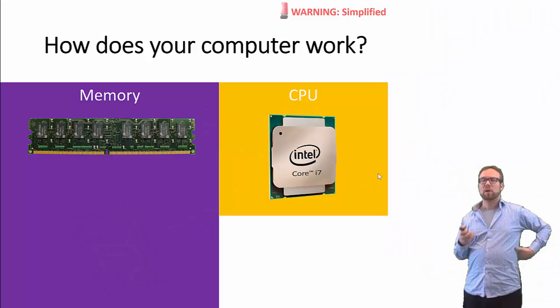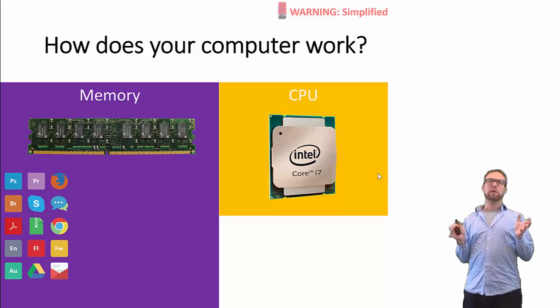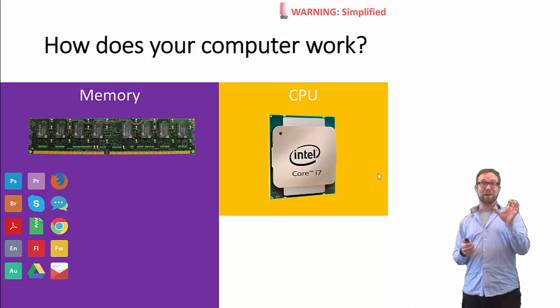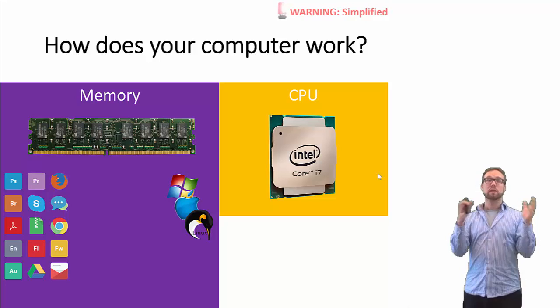So we just focus on this part here, the memory and CPU. What's effectively happening is that all your different applications are going to be running on your computer, and the CPU is trying to switch between them. And in doing so, it stores part of what it's doing with its programs in the internal memory, in the DRAM.